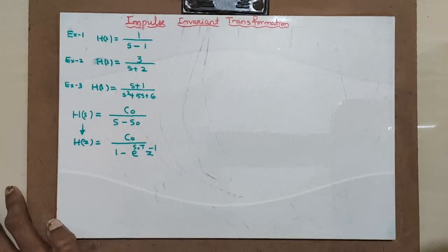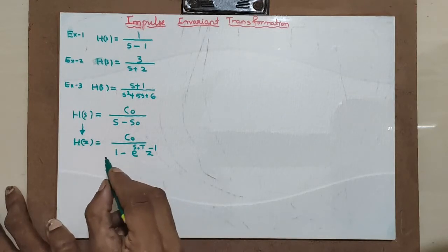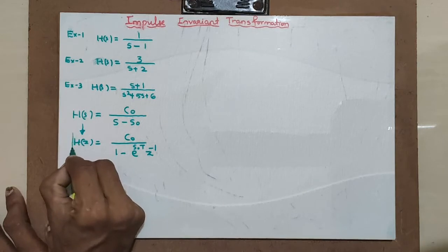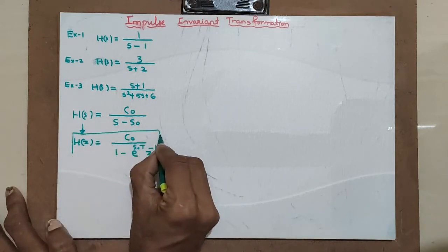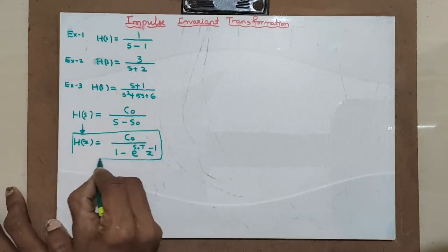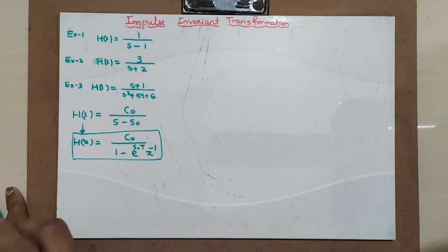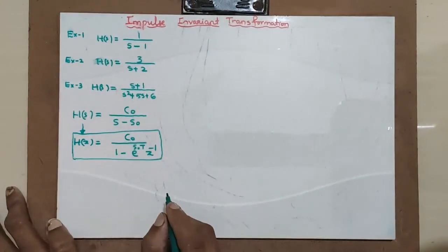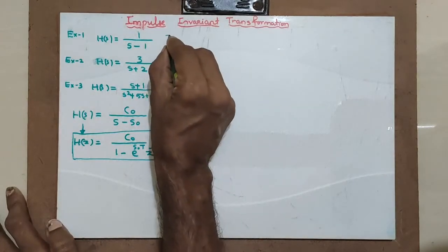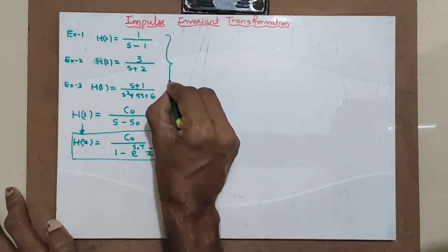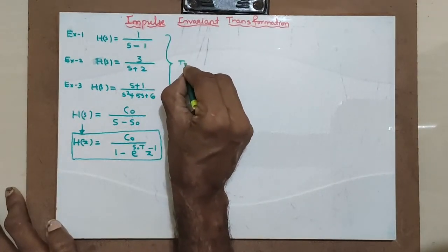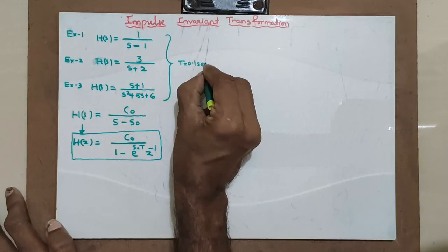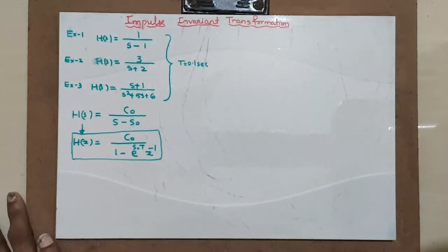The sampling period T will be given — sometimes it will be 1 second, sometimes 0.1 second, etc. This is the defining equation we need to solve numerical examples in impulse invariant transformation. All these examples we will take with T equal to 0.1 second.